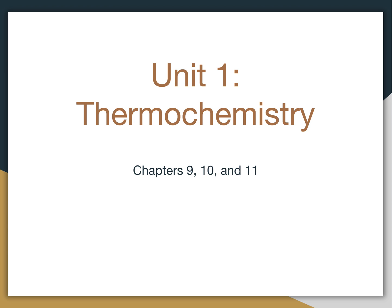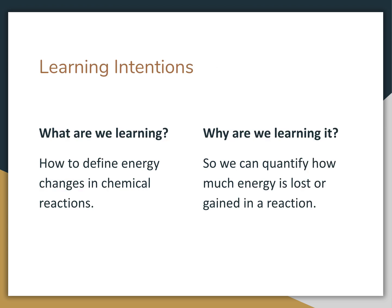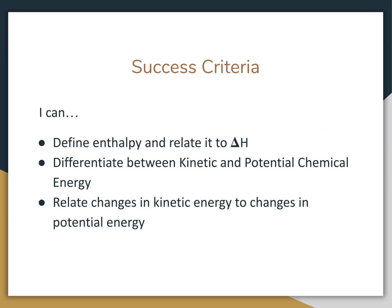Our learning objectives for today is being able to define energy changes in chemical reactions. The reason we want to do this is we want to be able to quantify how much energy is being lost and gained. Our success criteria is being able to define enthalpy and relate it to delta H, being able to differentiate between kinetic and potential energy changes, and being able to relate changes in kinetic energy to changes in potential energy.